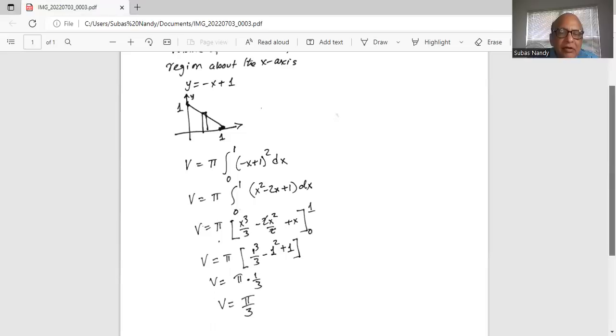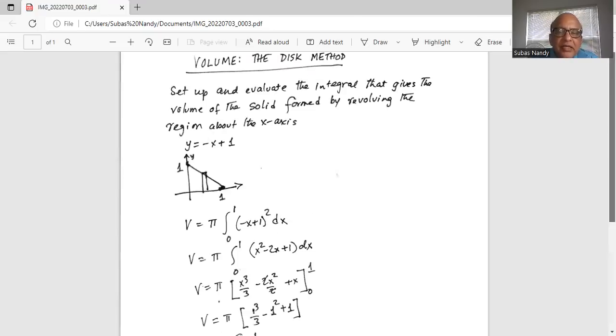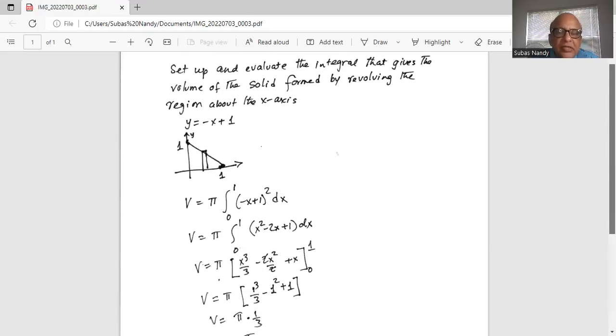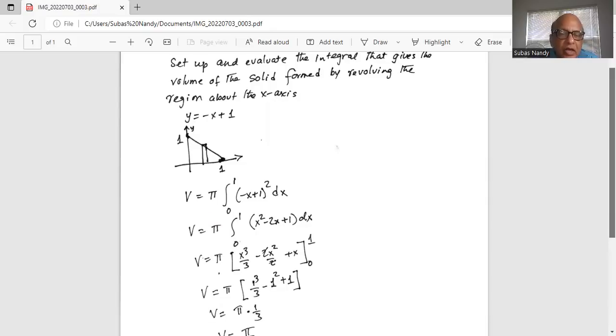Now we integrate. The integral of x squared is x cubed over three, minus 2x gives us minus 2x squared over two, and the integral of one is x. The two in the numerator and denominator cancel, giving us pi times x cubed over three minus x squared plus x.